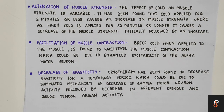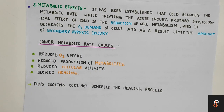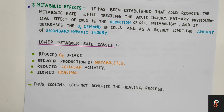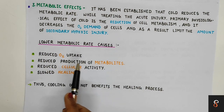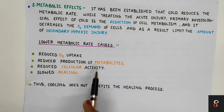Next we will see the metabolic effect. With the application of cold, it reduces the metabolic rate. The primary physiological effect of cold application is reduction in cell metabolism. When cell metabolism is reduced, it decreases the cell's oxygen demand. As a result, it limits the amount of secondary hypoxic injury. Lower metabolic rate causes: reduced oxygen uptake by cells, reduced metabolite production, reduced cellular activity, and slowed healing process.